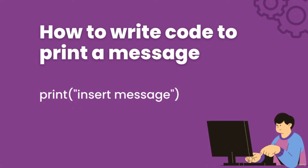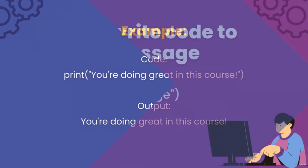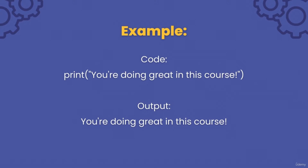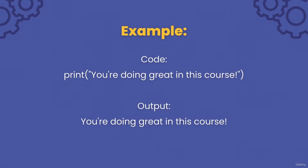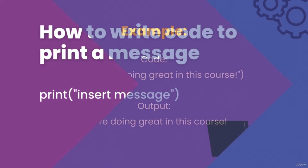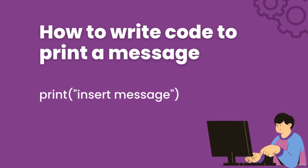open quotation marks, and inside the quotation marks you will insert the message you want displayed. For example, let's say I want to write a program that prints the text 'you're doing great in this course.' Then I would write print, open brackets, open quotation marks, and write: you're doing great in this course! Now you know how to print text and messages. Anytime you want to print something, just follow this format and put your text inside the quotation marks.